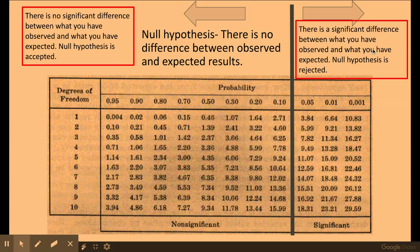If my value was to lie to the right hand side of my 5% level, it means that there is a significant difference between what you've observed and what you've expected, and the null hypothesis is rejected.